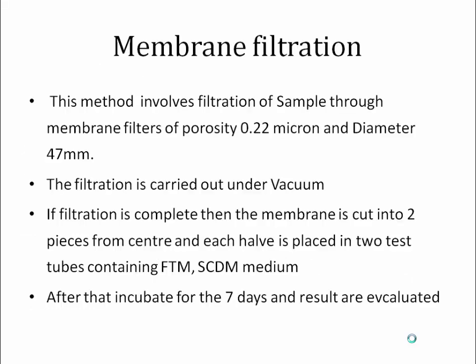Moving to membrane filtration: a filter paper of 0.22 micron size and 47 millimeter diameter is used. During filtration, particles larger than 0.22 microns are retained on the filter paper, while smaller particles pass through. This membrane filtration is carried out under vacuum. The filter paper is then cut into two halves — one half is dissolved in Fluid Thioglycollate Medium and the second in Soybean Casein Digest Medium.